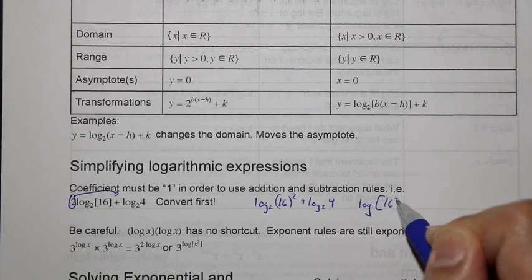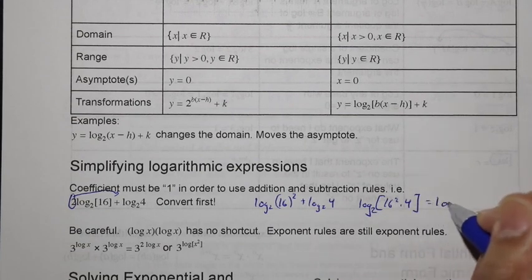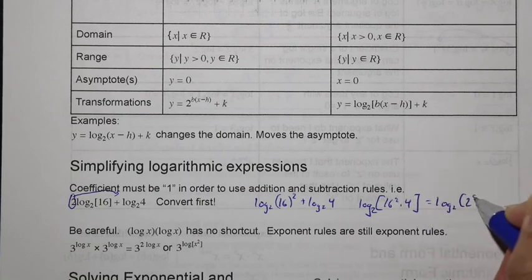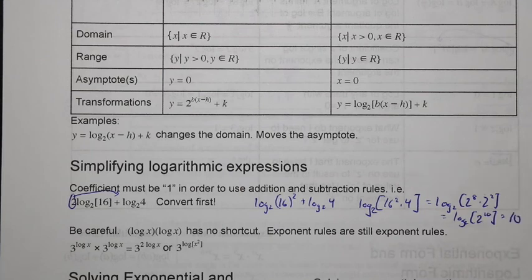Plus log 2 of 4, and now we can combine using the addition rule. So this is now log of 16^2 times 4 base 2, and let's convert. Here this is going to be equal to log base 2 of 2^4, this is 2^8, and then we have 2^2, so this is equal to log base 2 of 2^10, which here is equal to 10.